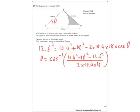Stick that in your calculator, you end up with 43.093 — I'll put 43.09 degrees. So once I've got that, then it becomes fairly straightforward.